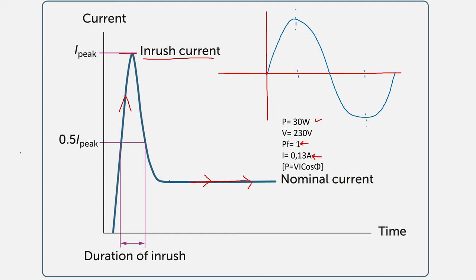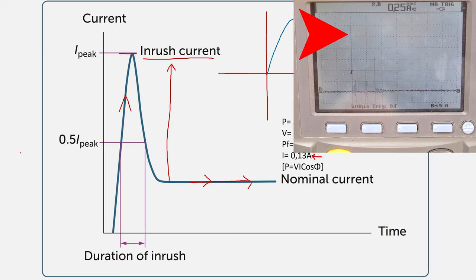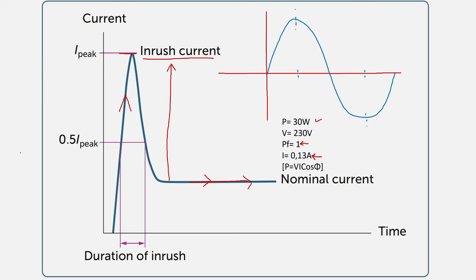Unfortunately, when the light turns on it has quite a high inrush current, and that inrush current depends on a few factors. One factor is where the voltage wave happens to be when you turn on the power. For example, if you turned on the power and the voltage happened to be at 90 degrees phase angle, we would see a sudden increase in voltage as soon as you close that switch.